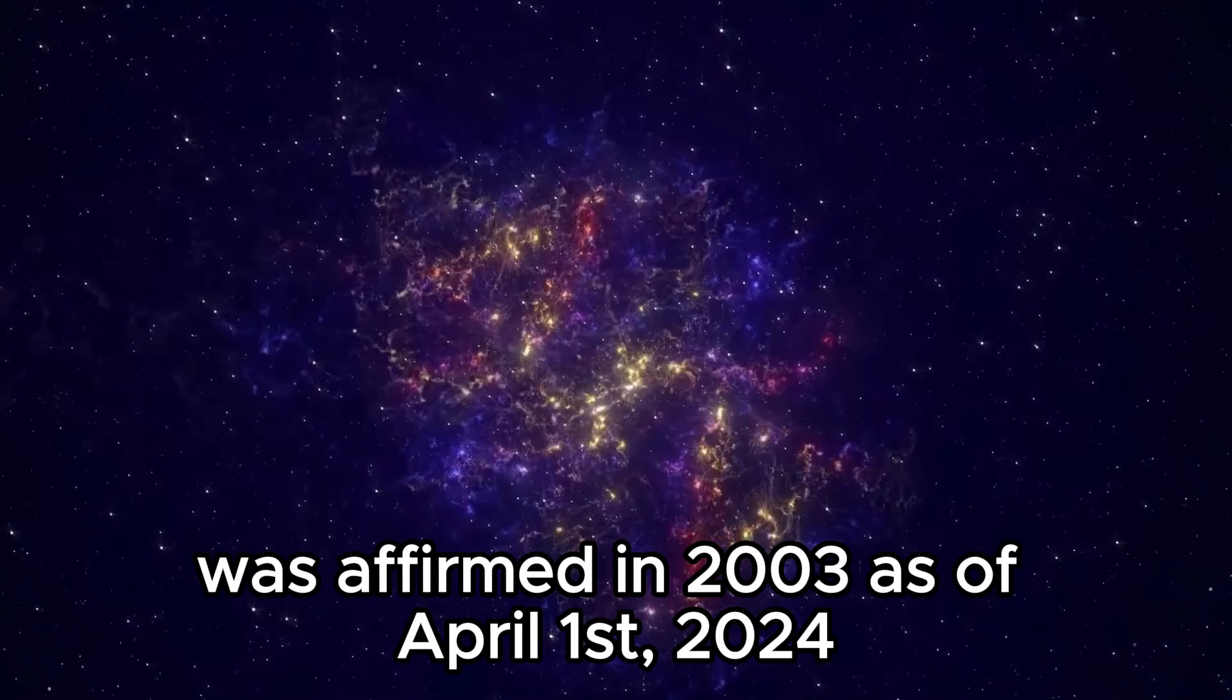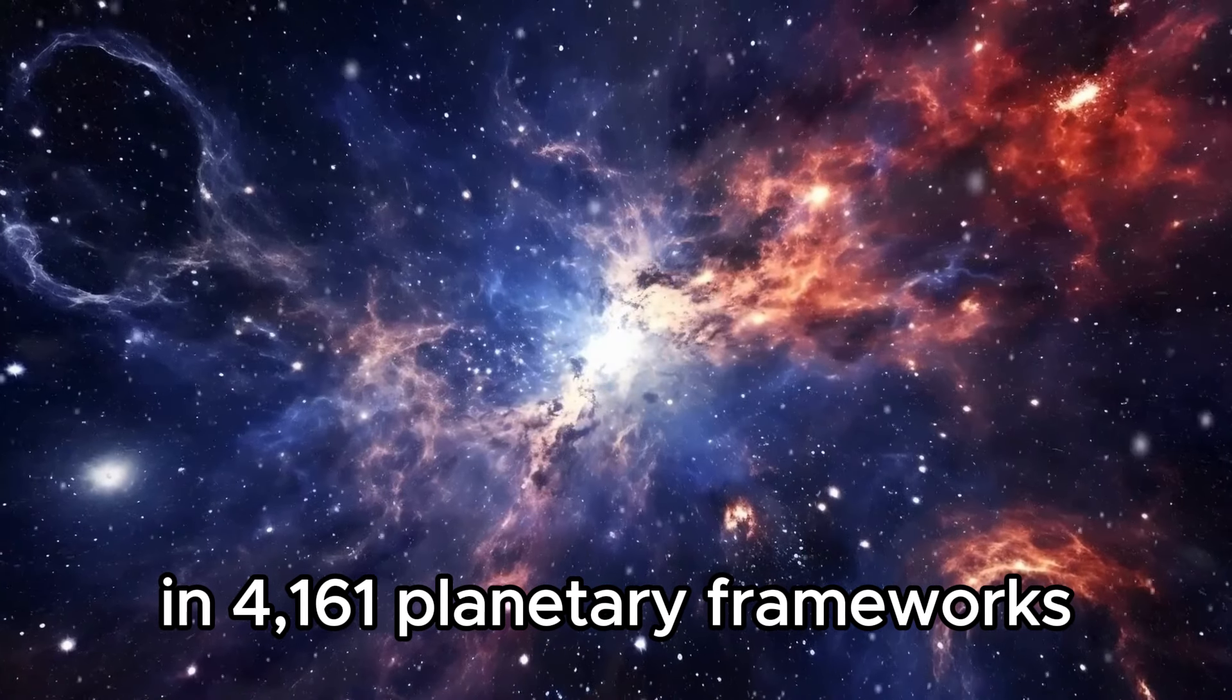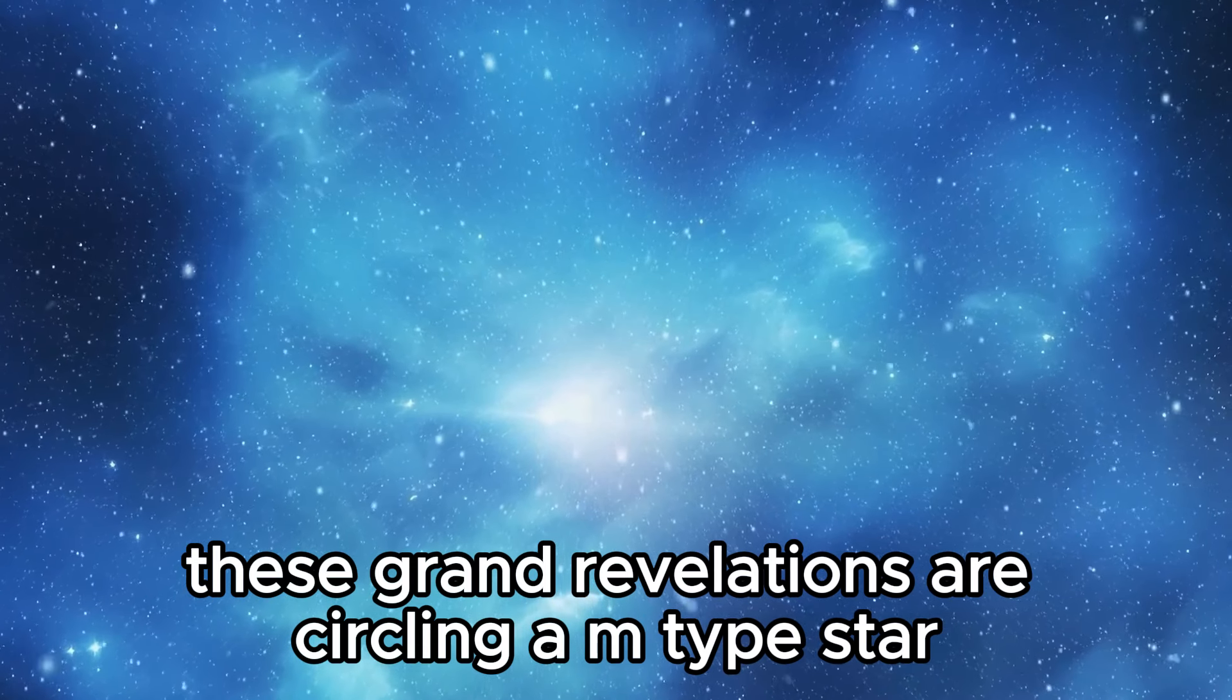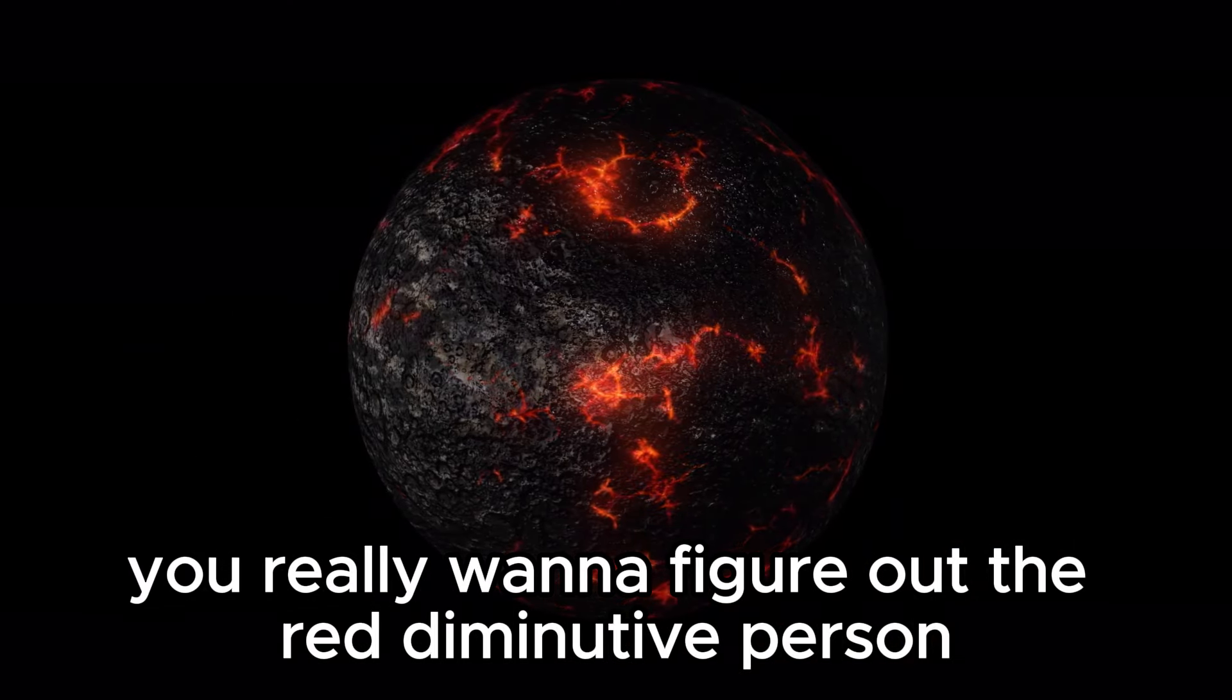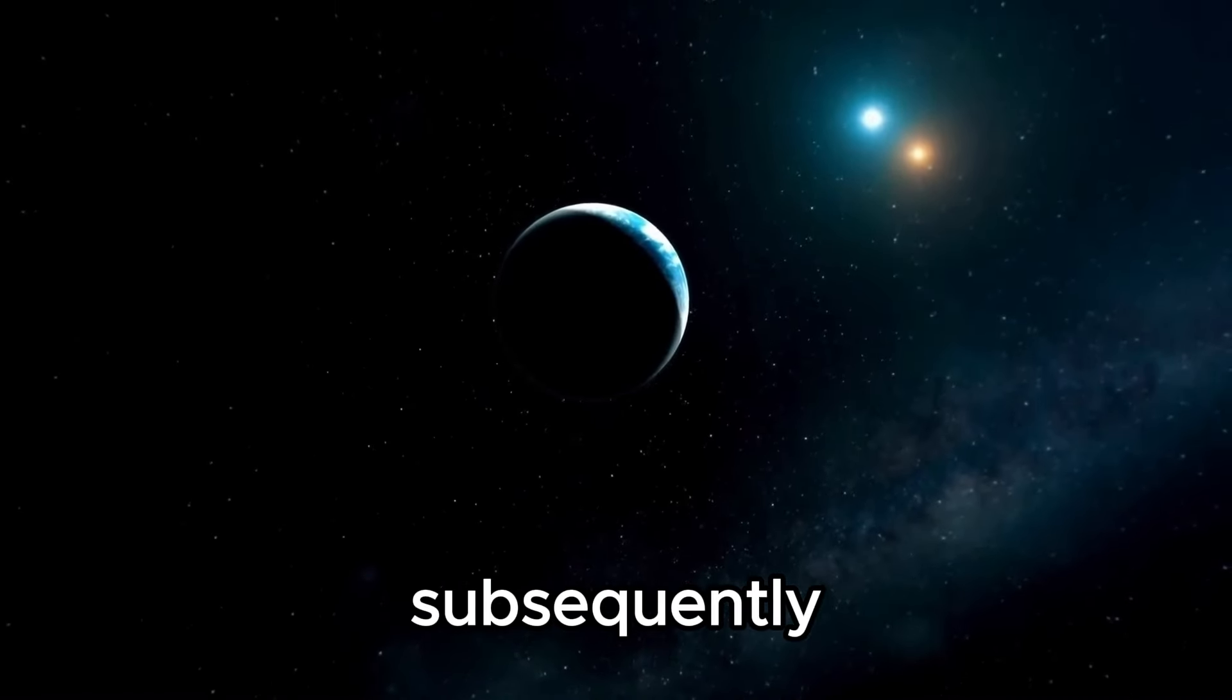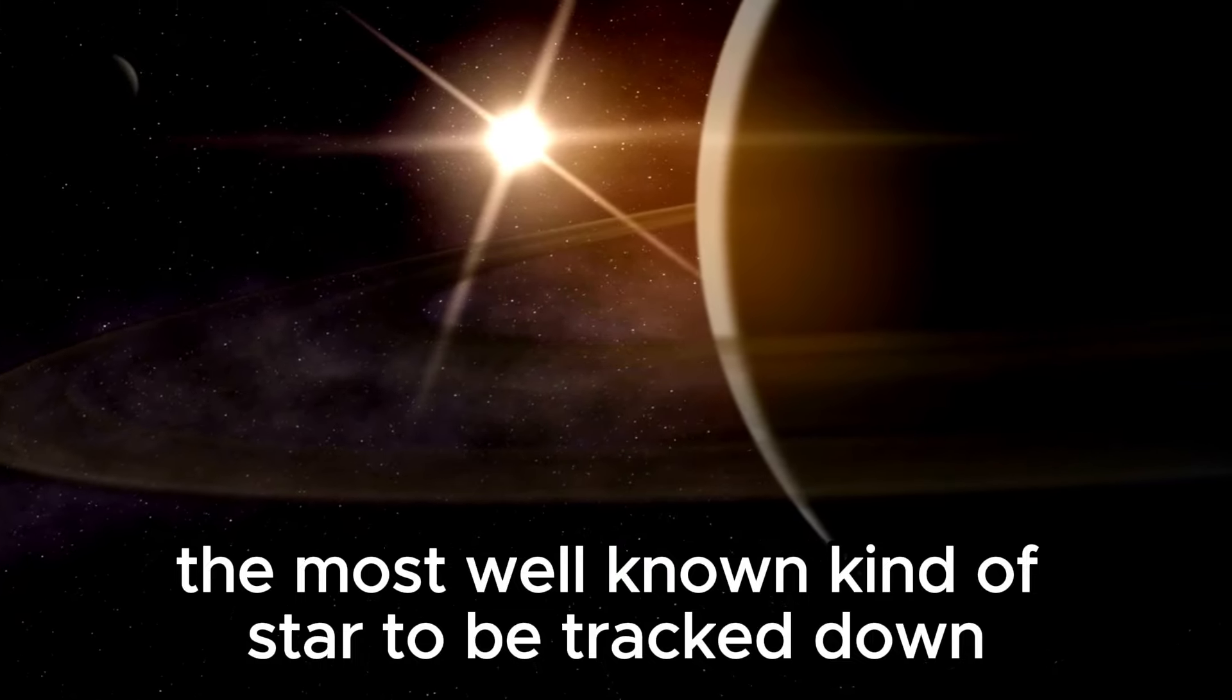As of April 1st, 2024, there are 5,653 confirmed exoplanets in 4,161 planetary systems. Out of them, 896 systems had more than one planet. These grand discoveries are orbiting M-type stars at the present time. To make sense of the M-type star, you need to understand the red dwarf. A red dwarf is the smallest type of star in the main sequence. In the neighboring regions of the Sun, red dwarfs are by far the most common type of star to be tracked down in the Milky Way.